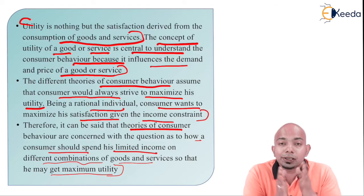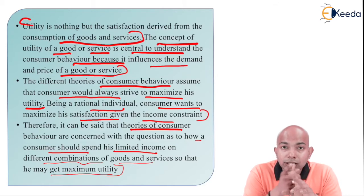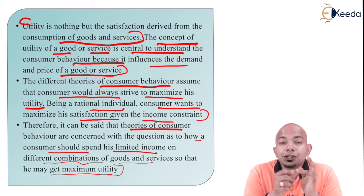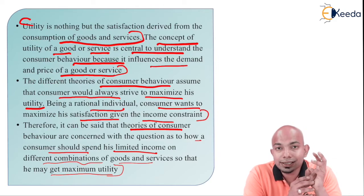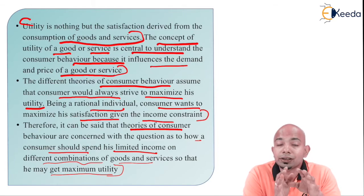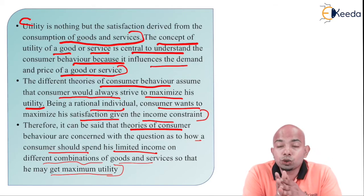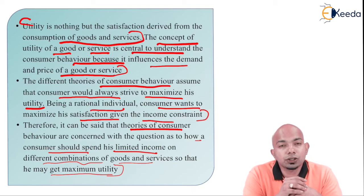So three factors are supposed to be considered: price of the product, demand for the product, and utility — which refers to satisfaction. With all these three constraints, there is a fourth additional constraint to take into consideration: the income constraint. Whatever income you have will be restricted, you'll have to do budgeting, and understanding how a consumer behaves to maximize satisfaction in that scenario is the essence of the theory of consumer behavior.